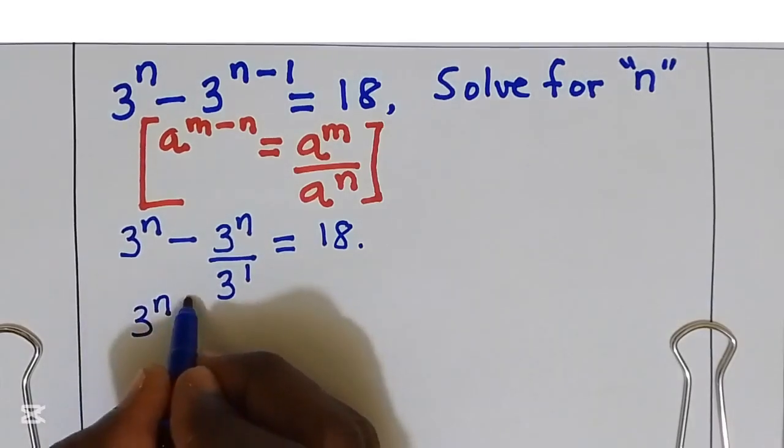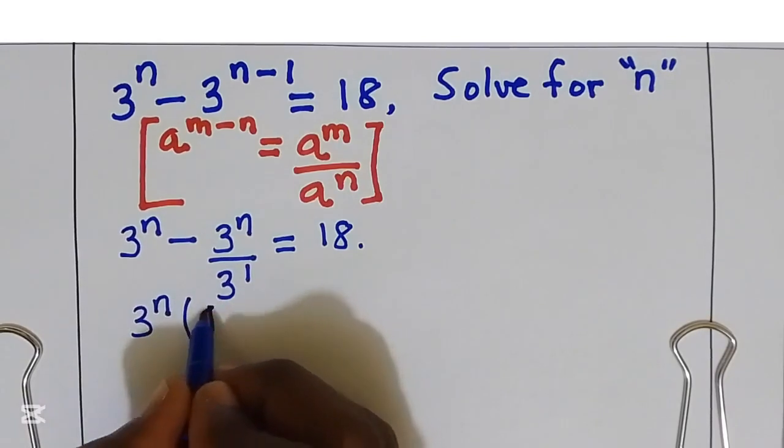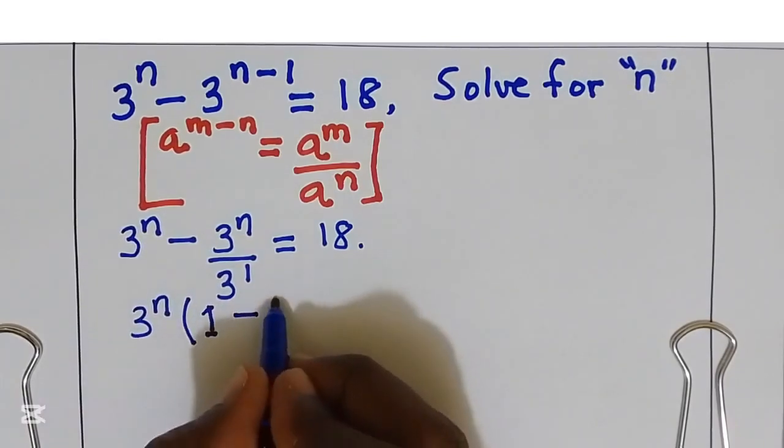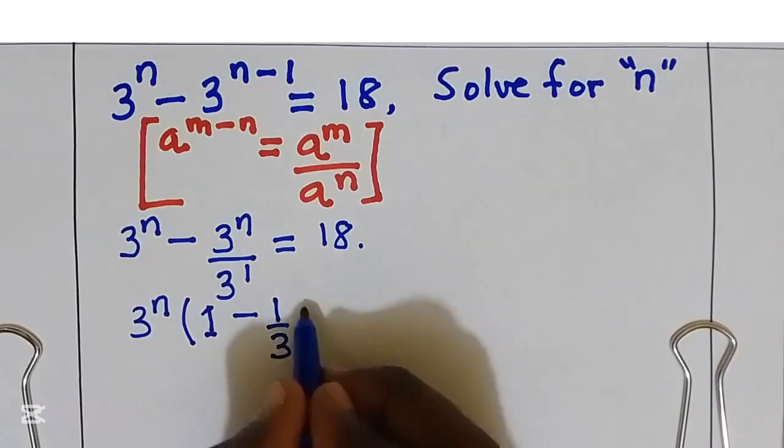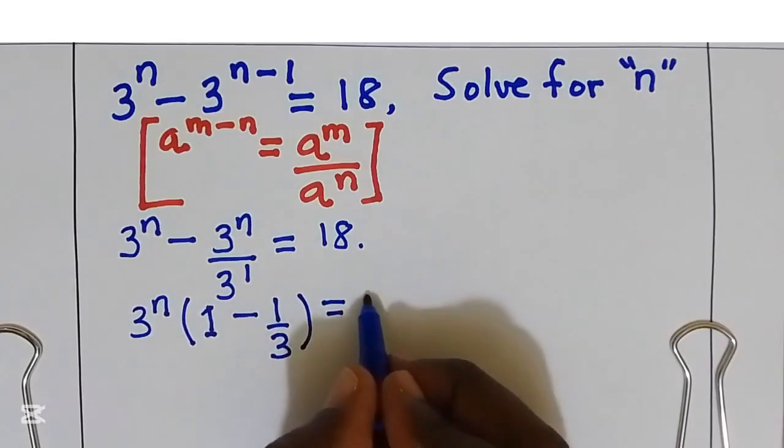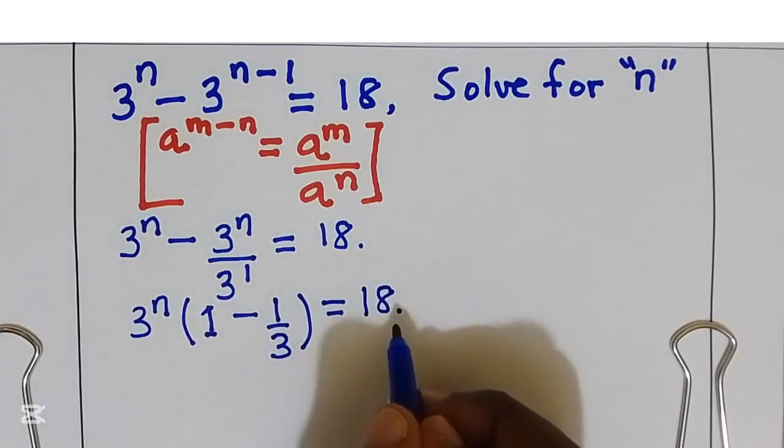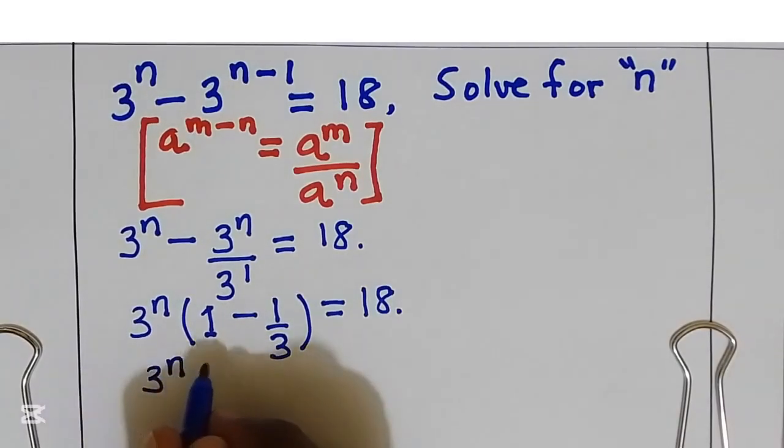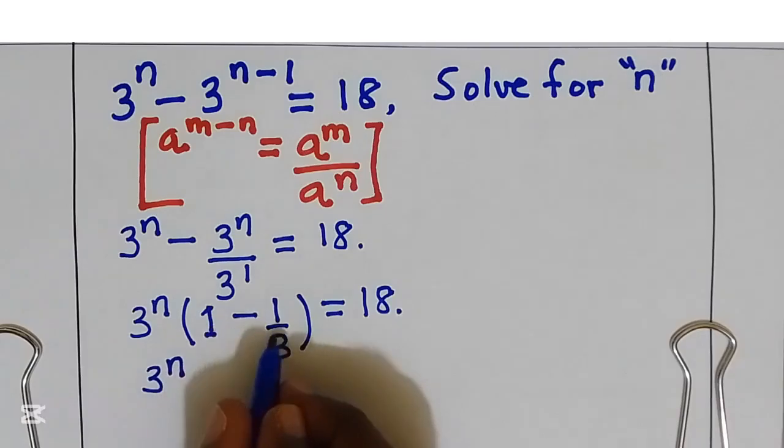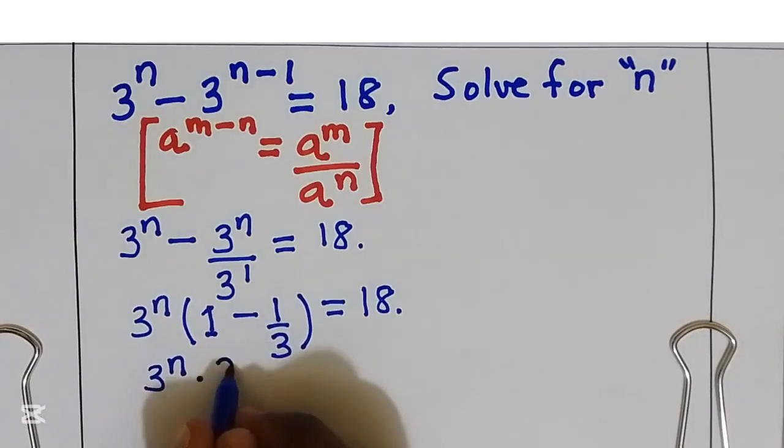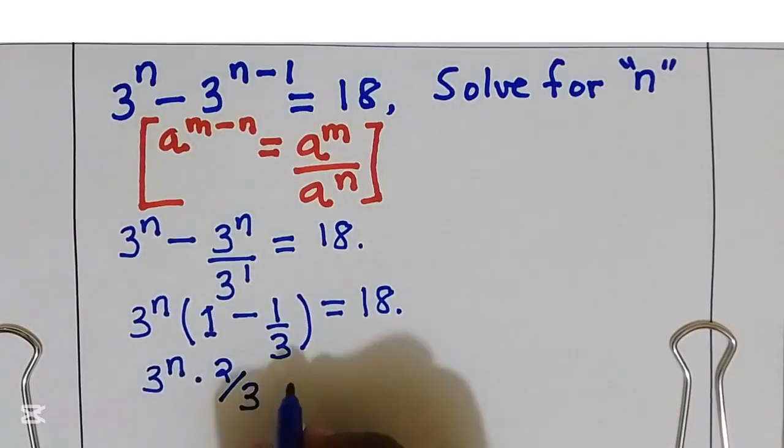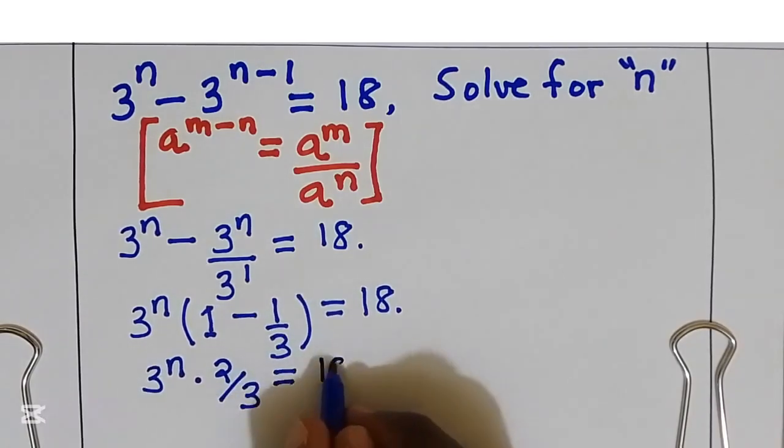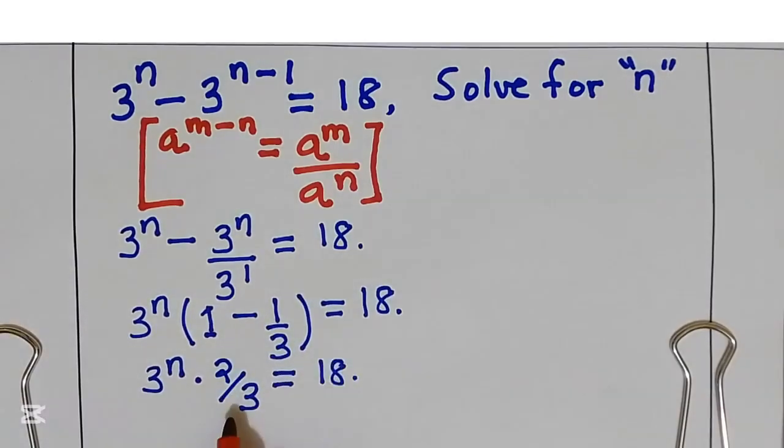3 power n in the bracket, we are going to remain with 1 minus 1 over 3. This is equal to 18. 3 power n, 1 minus 1 over 3 is going to remain 2 over 3. This is equal to 18. I'm going to multiply by 3 over 2 both sides.